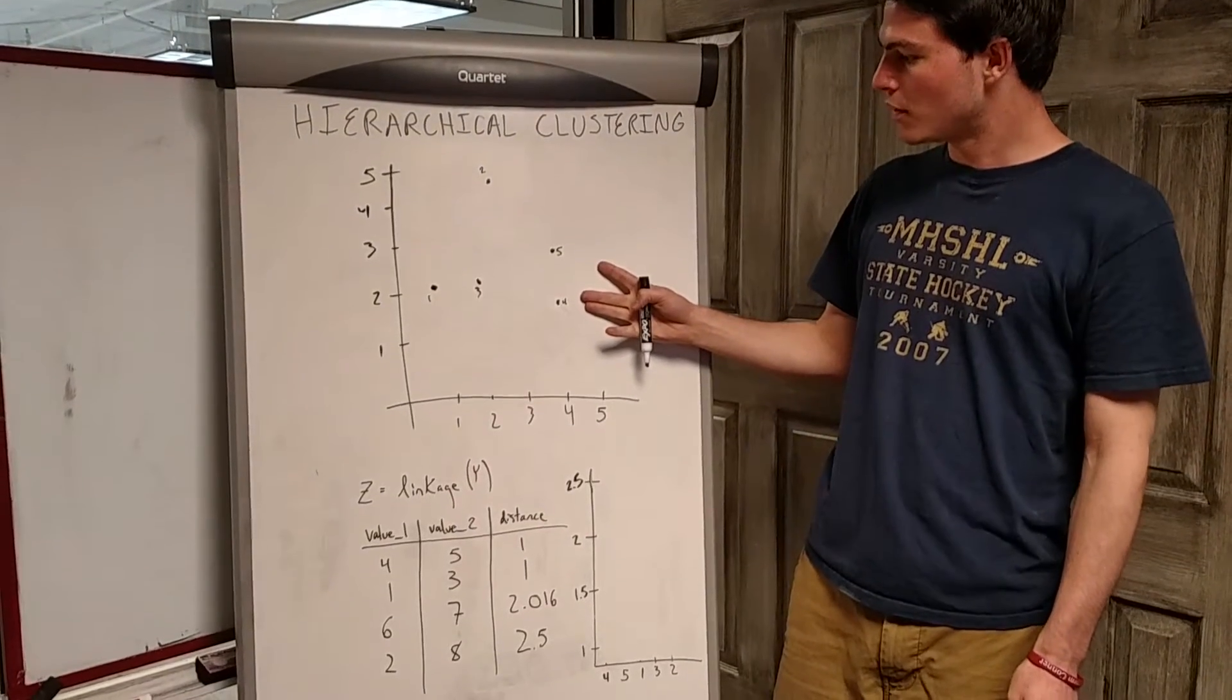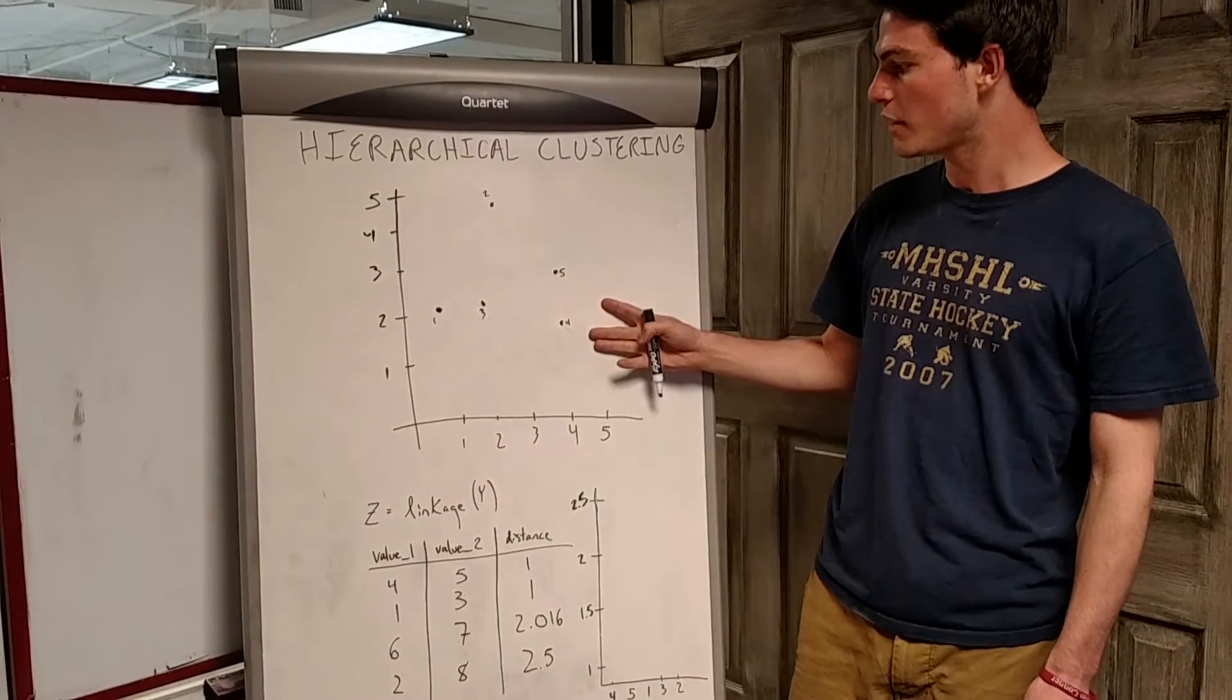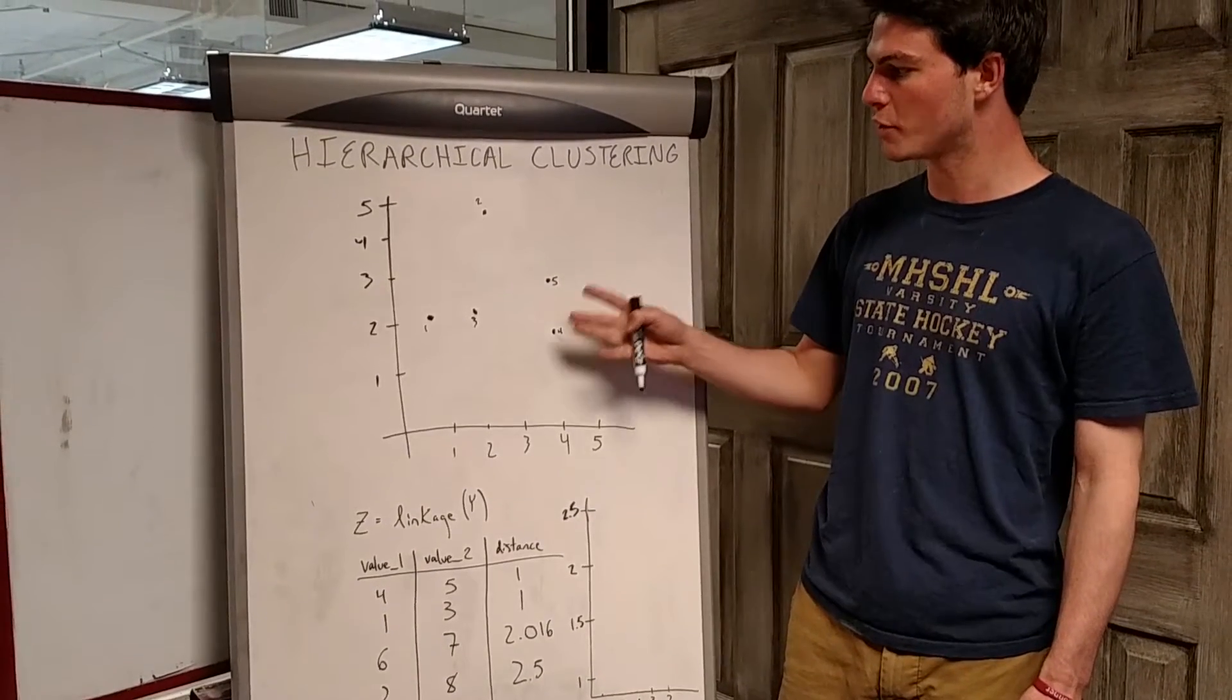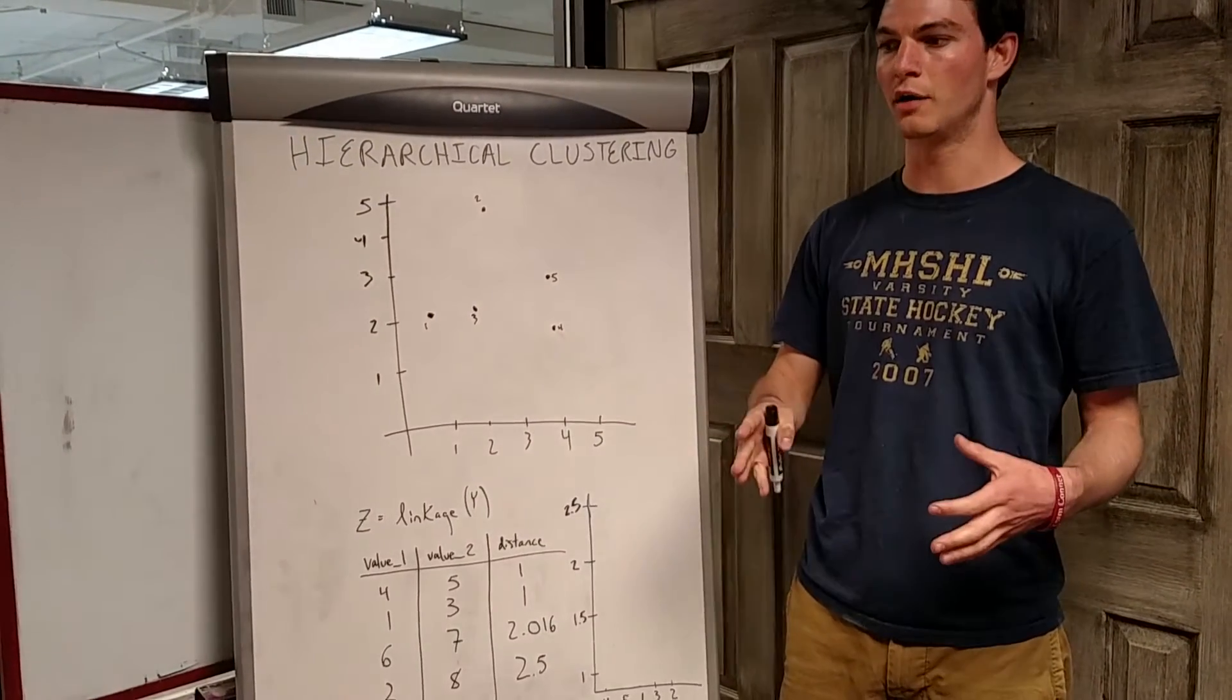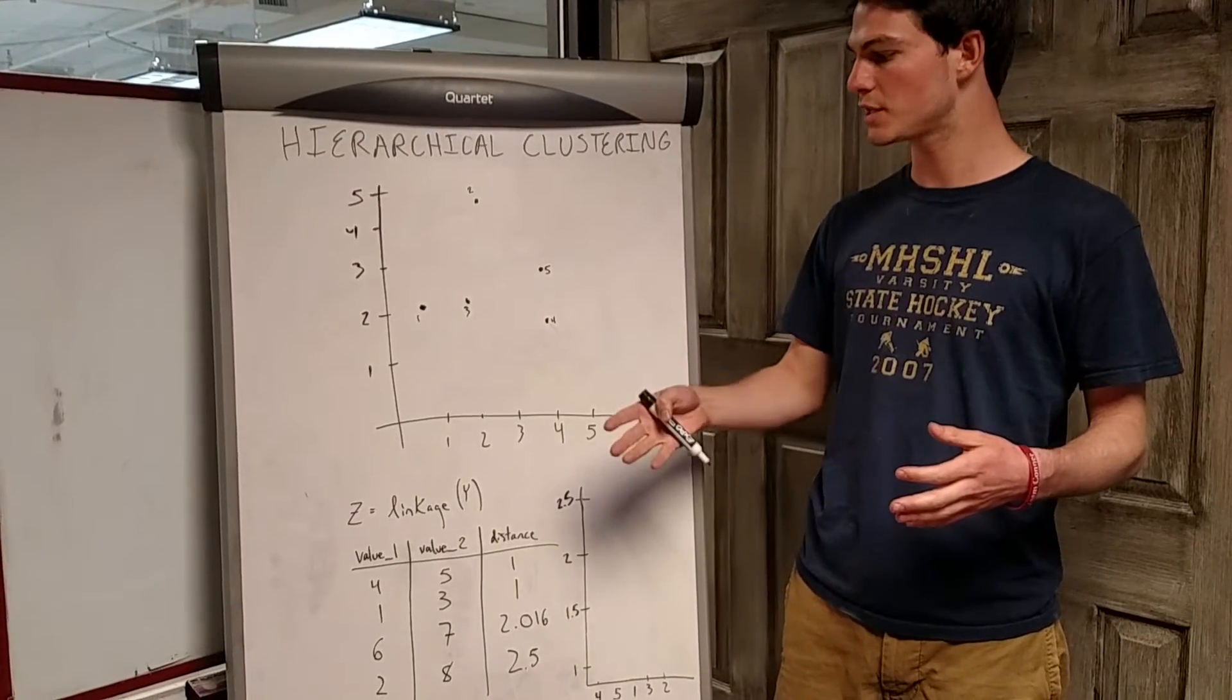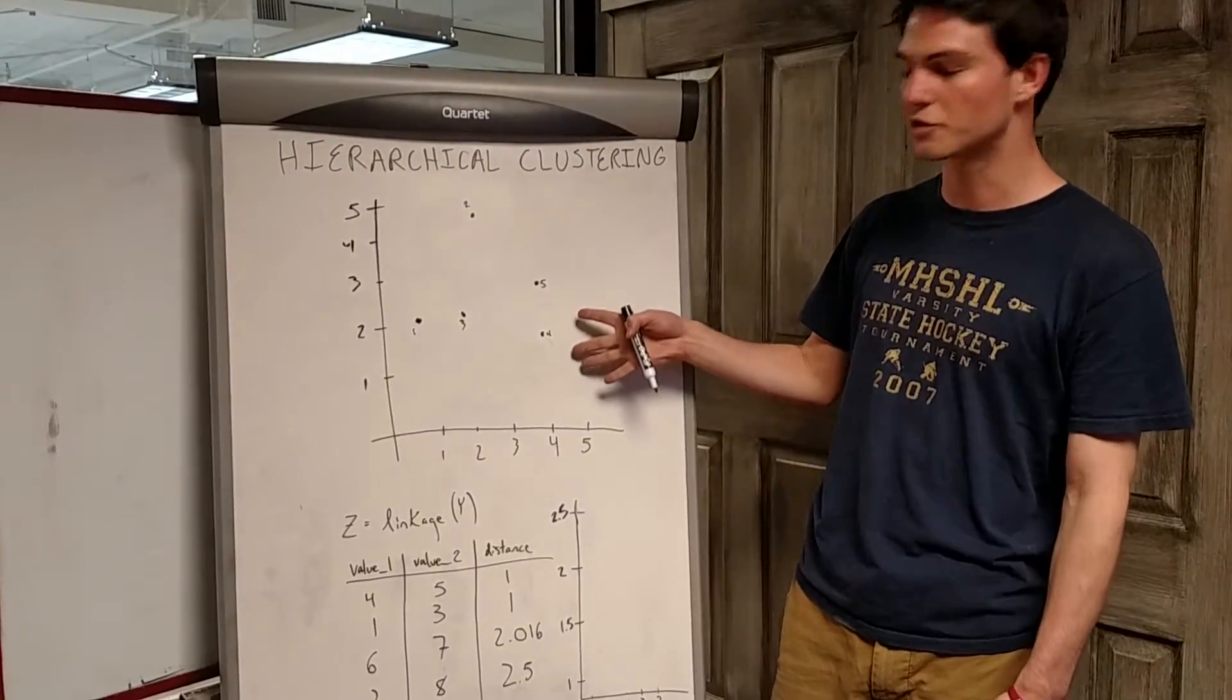The way that a hierarchical cluster is formed is it measures Euclidean distance between points on our scatterplot. The way that it determines if one point is close to another point can be determined by a number of key distribution ways based on Euclidean distance. In class we talked about using linkage. Here I'm going to demonstrate what linkage would produce for this underlying data.